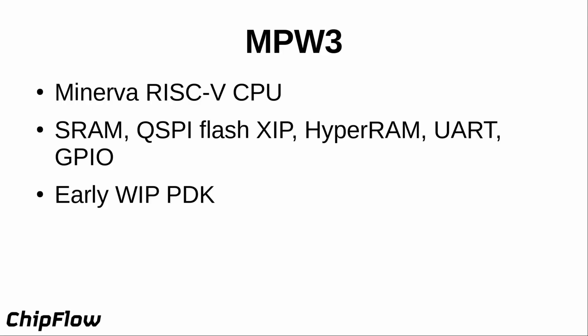Our first tape-out using this flow was on MPW3 back in October/November. This was a Minerva RISC-V CPU — Minerva is a RISC-V core written in Amaranth — combined with SRAM, quad SPI flash with execute-in-place so it can run code directly off flash, external HyperRAM support, UART, and GPIO. This was using a very early work-in-progress port of Coriolis to the Sky 130 PDK.